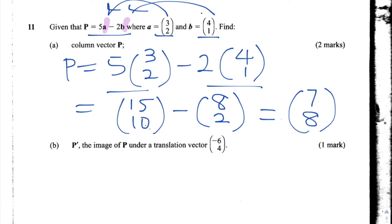Part B says P dash, the image of P under a translation (-6, 4). So P dash is equal to the answer we got for P plus this translation vector T, which we're given as (-6, 4). So let's substitute in the values. So we have (7, 8) plus (-6, 4). So 7 plus -6 is the same as 7 minus 6, which is 1. 8 plus 4 is 12. So the answer is (1, 12), or 1 in the x and 12 in the y.